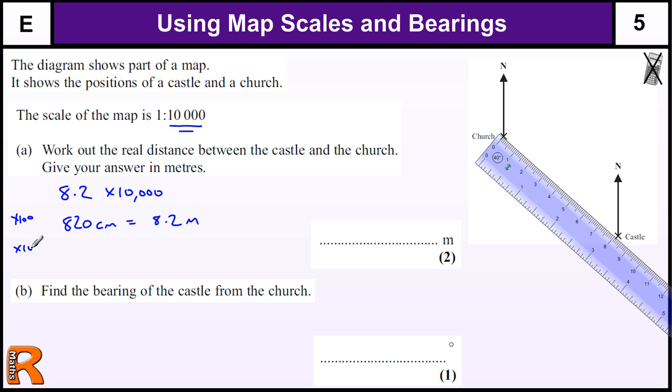So I need to times by another 100, because it's 2 lots of 100 I'm multiplying by, to get 8, 2, 0 and then another 2, 0 centimeters. So that's times this by 100, which is 820 meters. The distance between the castle and the church should be 820 meters. So you take your 8.2 that you measured, or whatever measurement you got, and times it by 10,000.